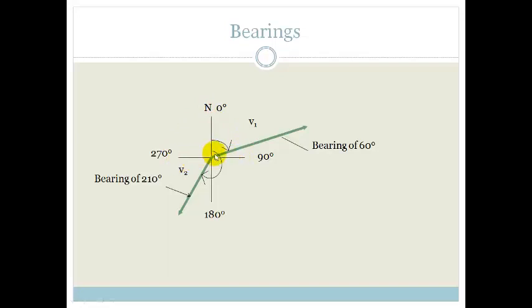So, the same vectors, well this one's the same vector that we were talking about before V1, which was 30 degrees north of east, is actually 60 degrees from north. So, we say it's on a bearing of 60 degrees. So, we're reading from north clockwise and it's on a bearing of 60 degrees.